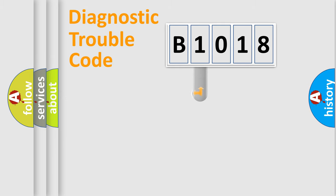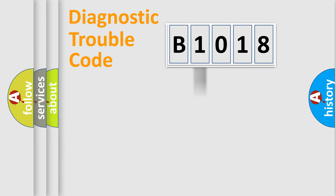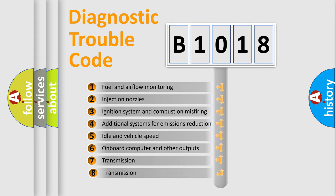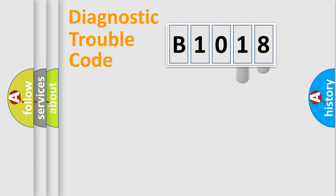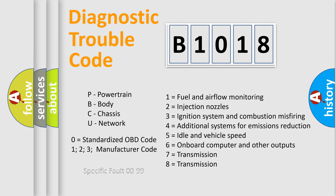This distribution is defined in the first character of the code. If the second character is expressed as zero, it is a standardized error. In the case of numbers 1, 2, or 3, it is a more manufacturer-specific expression of the error. The third character specifies a subset of errors. This distribution is valid only for the standardized DTC code, and only the last two characters define the specific fault of the group. Such a division is valid only if the second character code is expressed by the number zero.